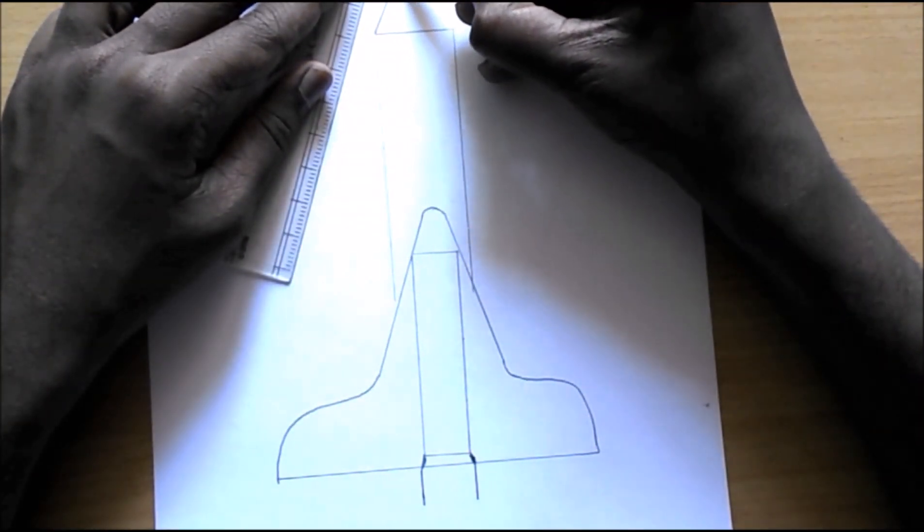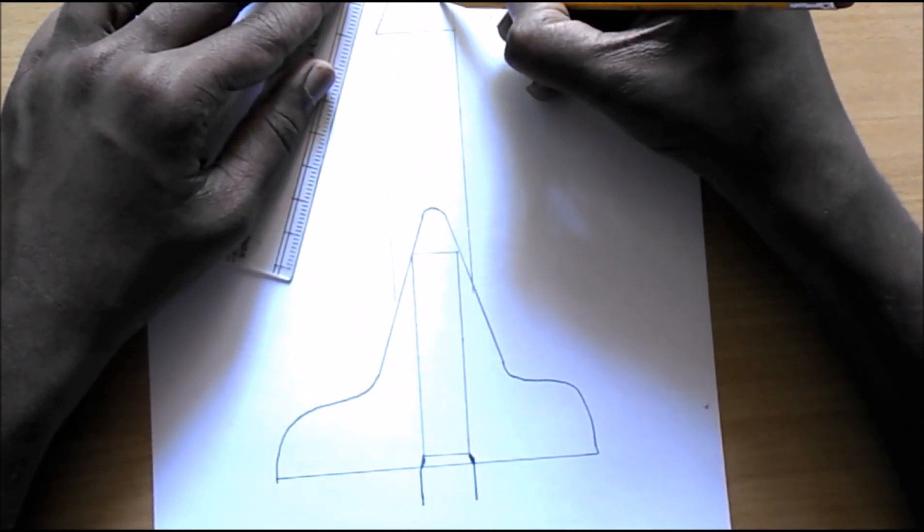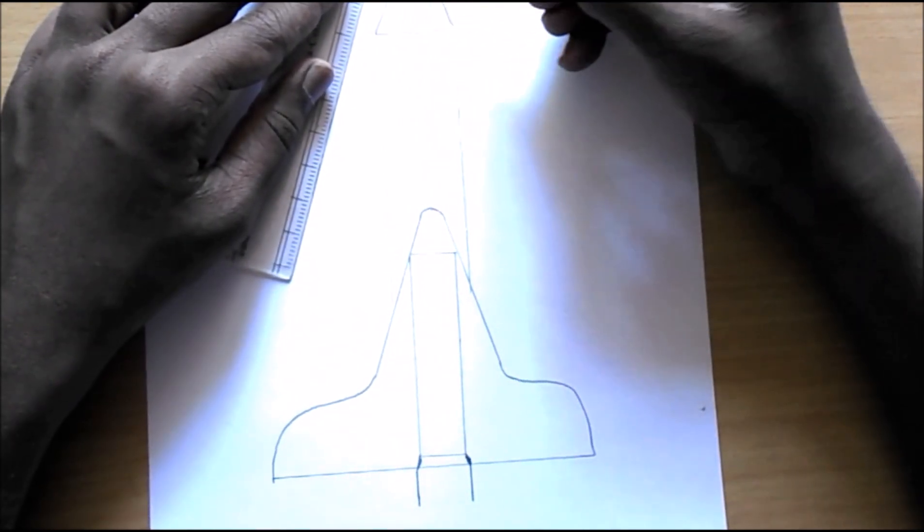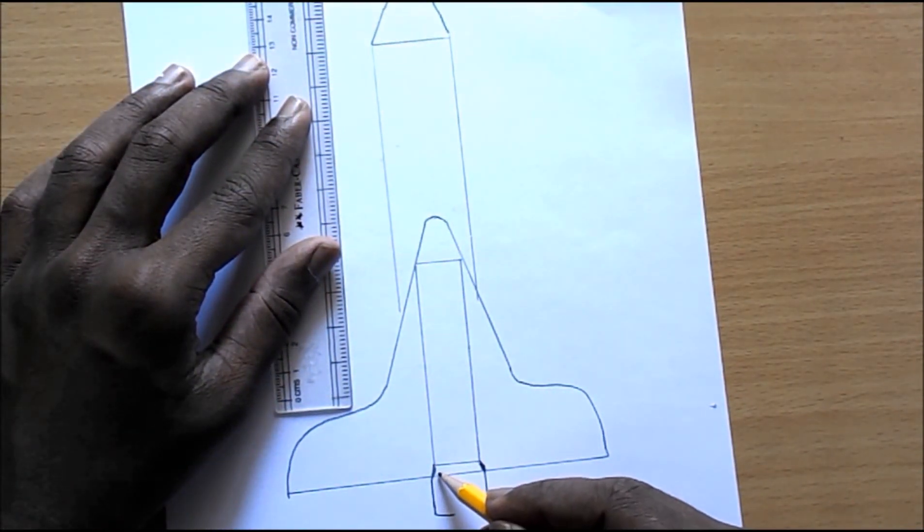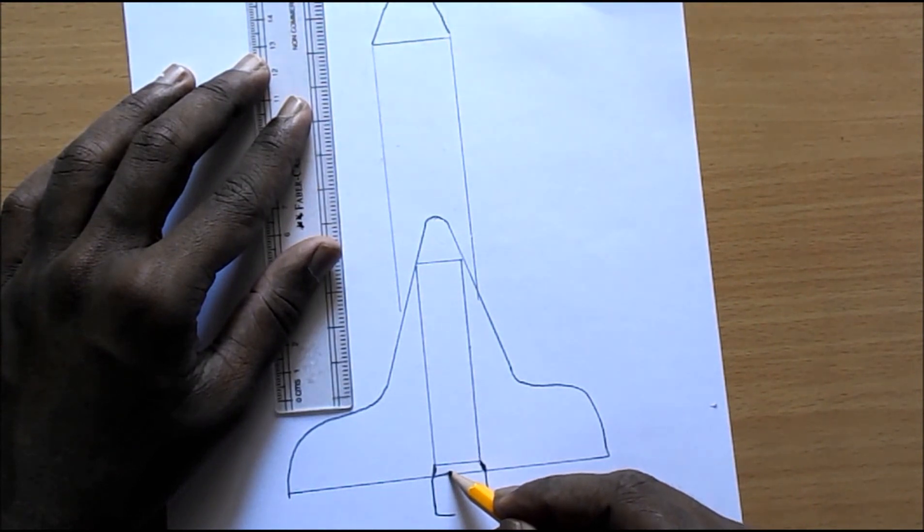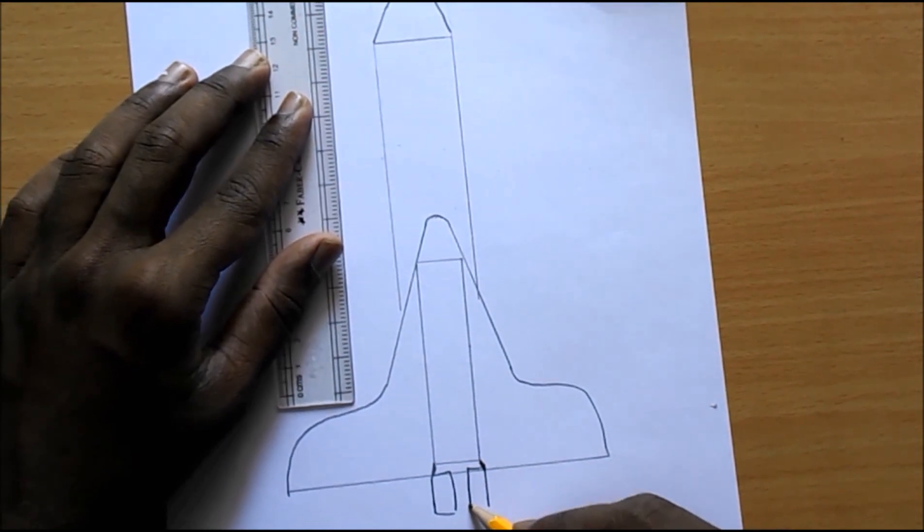Then draw the top position which looks like a rectangle but with curved edges. Draw the bottom surface as I was drawing out here.